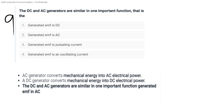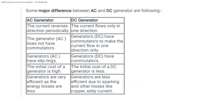DC and AC generators are similar in one important function: the generated EMF is AC in both. An AC generator converts mechanical energy into AC electrical power; a DC generator converts mechanical energy into DC electrical power. The difference is that AC current reverses direction periodically, while DC current flows in one direction. AC generators do not have commutators — they have slip rings. DC generators have commutators.